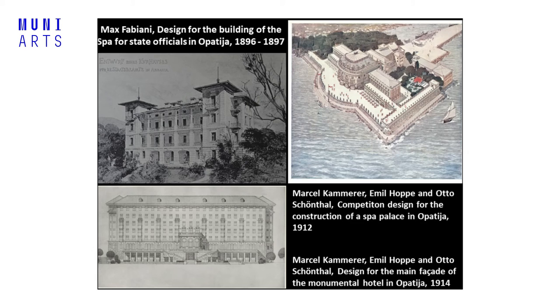Zaninović did make one design — hypothetically — for Croatia: his graduate thesis, a proposed casino for Hvar, which was then developing as a tourist destination. You can notice that he shaped the main portal of the building to look like a roulette wheel. So it is again a facade with a commercial message. Let's now look at a few buildings built in the Austrian coastal parts of Croatia according to designs of Wagner's students.